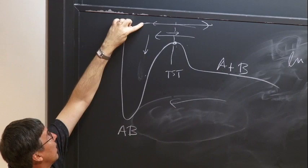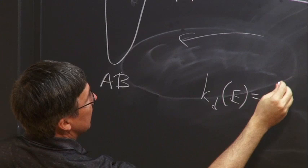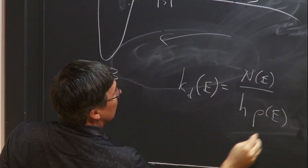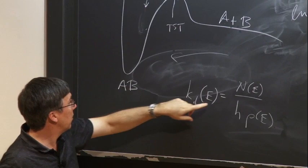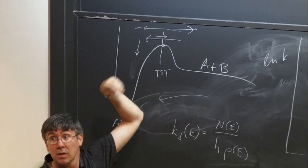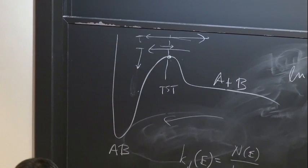Even a small change in energy makes the reverse rate much faster. The decomposition rate k(E) equals N(E) over h times rho(E). N(E) goes up very fast with energy because it zooms up as you go up in energy. So these high-energy molecules will fall apart faster — they're a more important fraction of the total. Those guys aren't going to be quenched effectively at a given pressure, whereas lower-energy molecules live longer and are more likely to get knocked down.